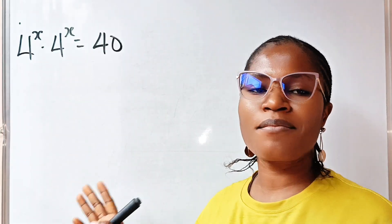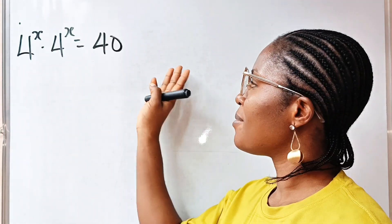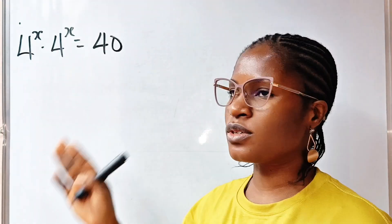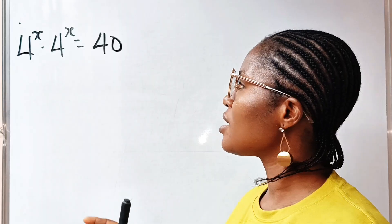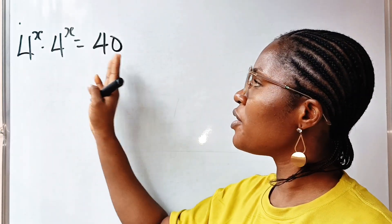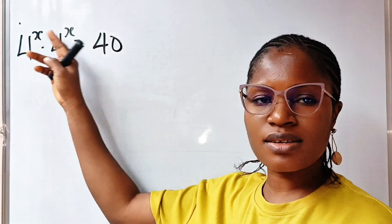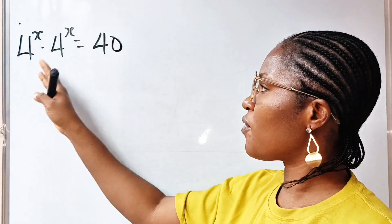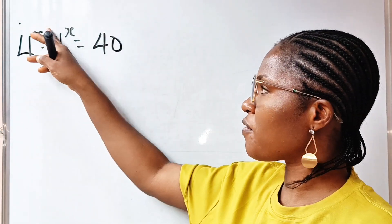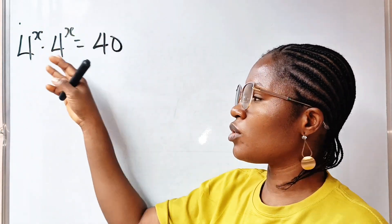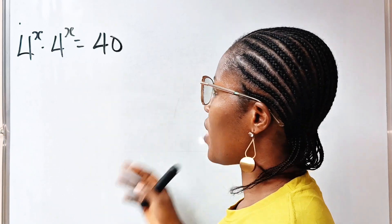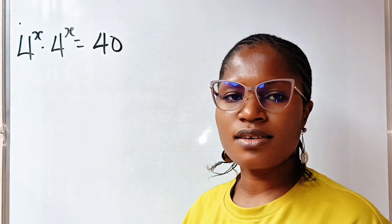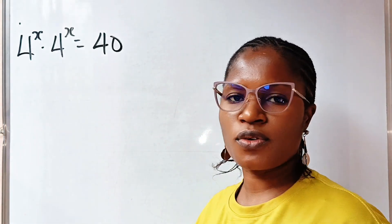Today we have an amazing problem to solve. We are asked to find the value of x if 4 to the power of x multiplied by 4 to the power of x is equal to 40.